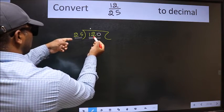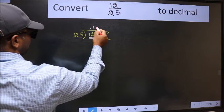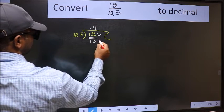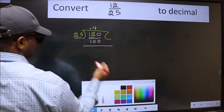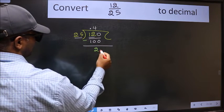A number close to 120 in the 25 table is 25 times 4 is 100. Now we should subtract. We get 20.